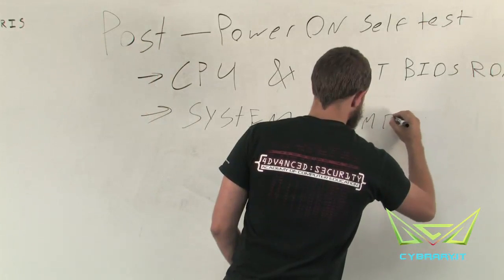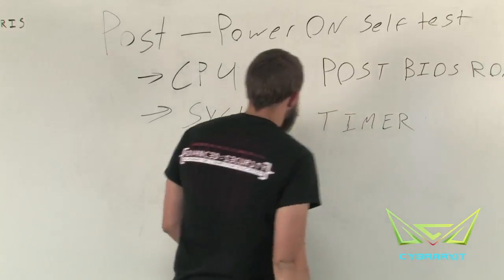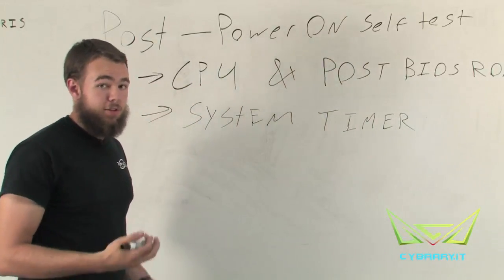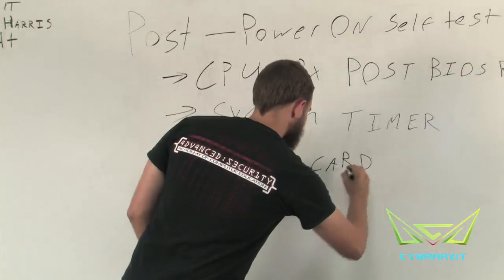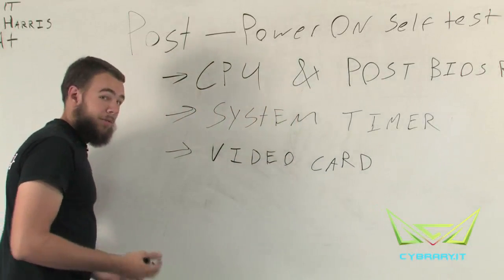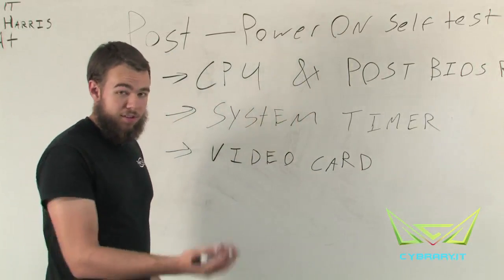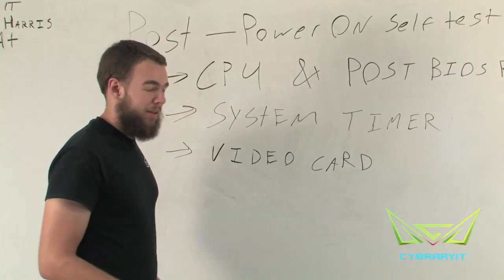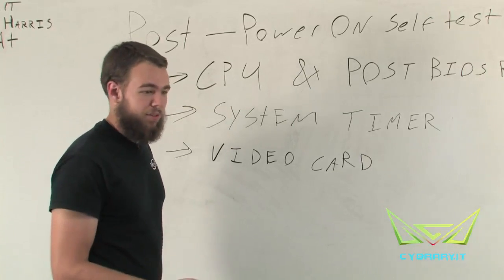Now our next step after here is going to be our system timer. We'll initialize our system timer, get it going and make sure that it's functioning properly. Now we'll have our video card. And of course our video cards are going to allow us to see output. And if that fails and we can't see output, then that's a good reason for the POST to stop.